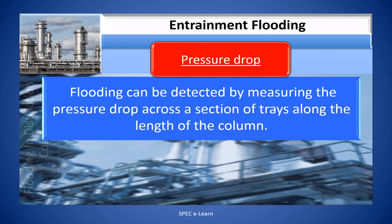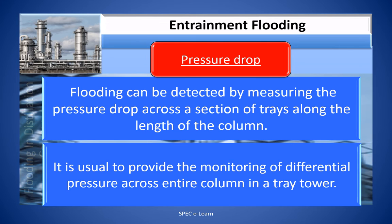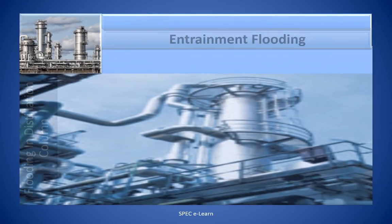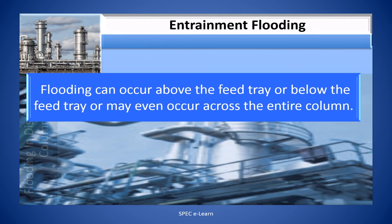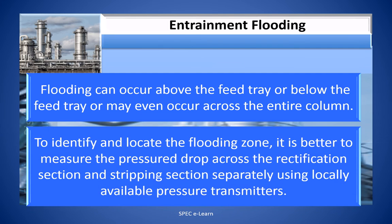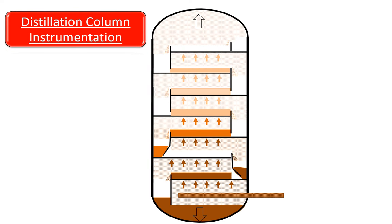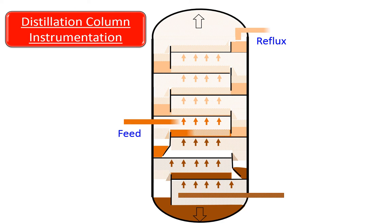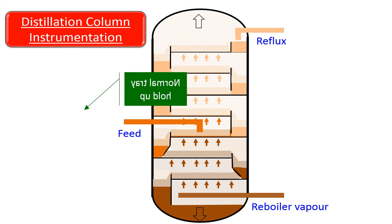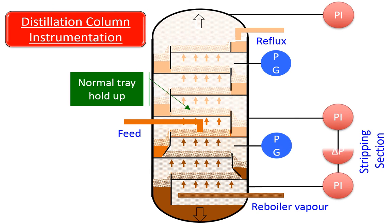Flooding can be detected by measuring the pressure drop across a section of trays along the length of the column — the differential pressure across the column in a tray tower. Flooding can occur above the feed tray, below the feed tray, or across the entire column. To identify and locate the flooding zone, it is better to measure the pressure drop across the rectification section and stripping section separately using locally available pressure transmitters. This figure illustrates a distillation column working under normal condition: when vapor and liquid loads are within the design limit, the differential pressure as indicated by the differential pressure transmitter will be normal.